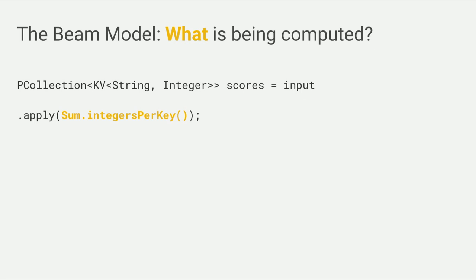The first question is what is being computed — this is the core of your business logic. In this case, we focus on summing integers per key. Think of it as a game where players are achieving scores and we are calculating scores over a period of time. That can be expressed in Beam and many other systems with one line of code: we take the input collection, apply a transformation — summing integers per key — and get a resulting collection out. This is a virtual collection spread over a large number of machines.